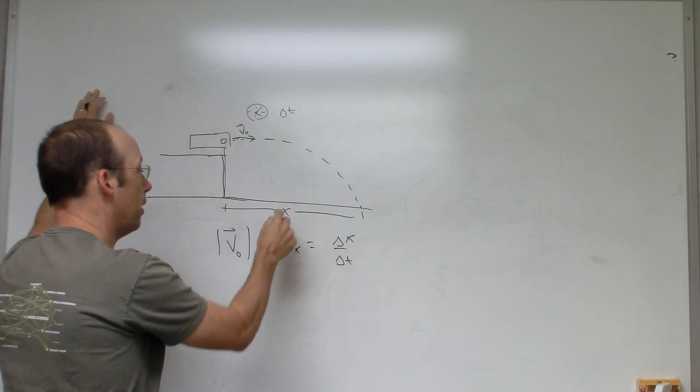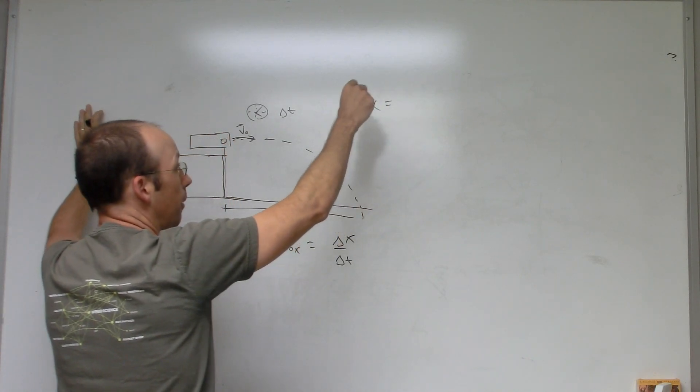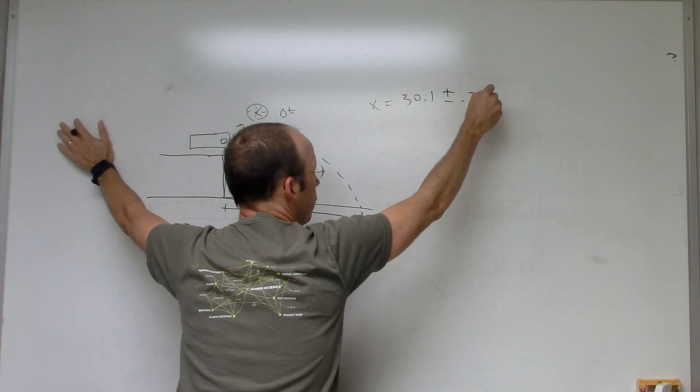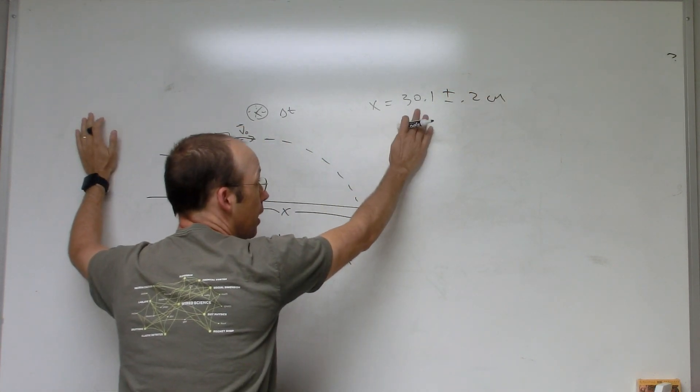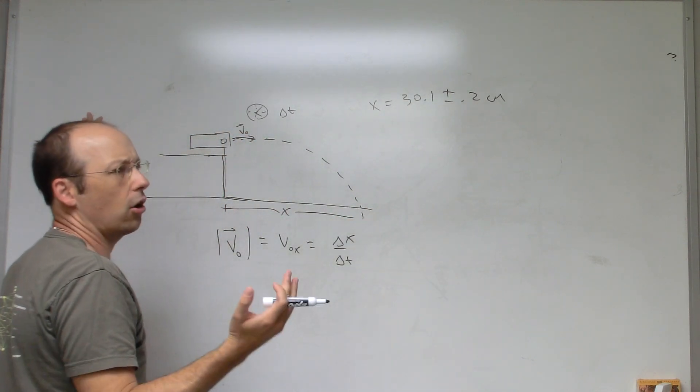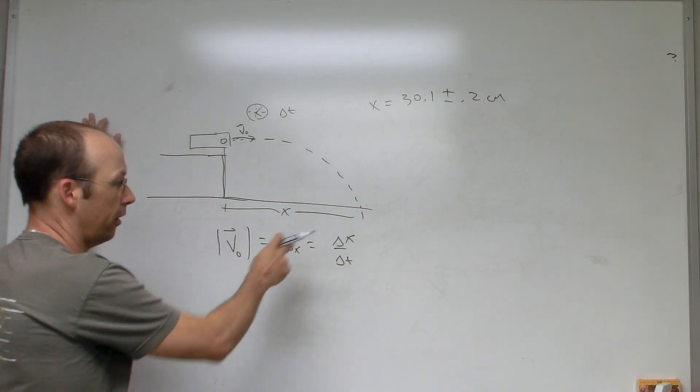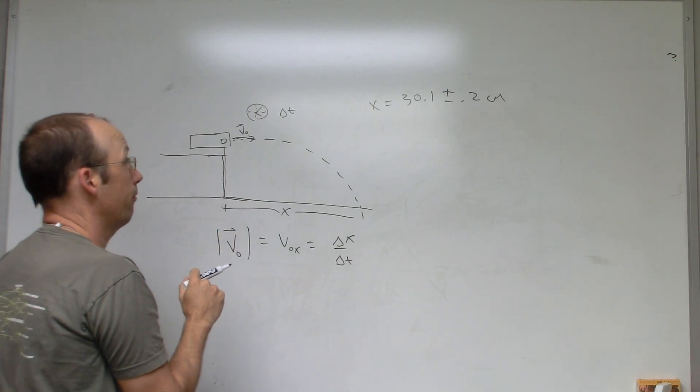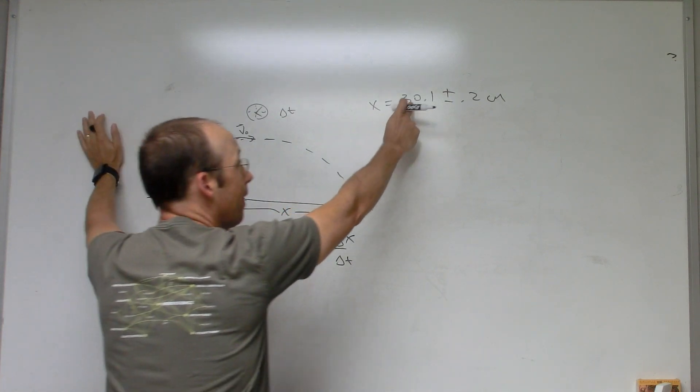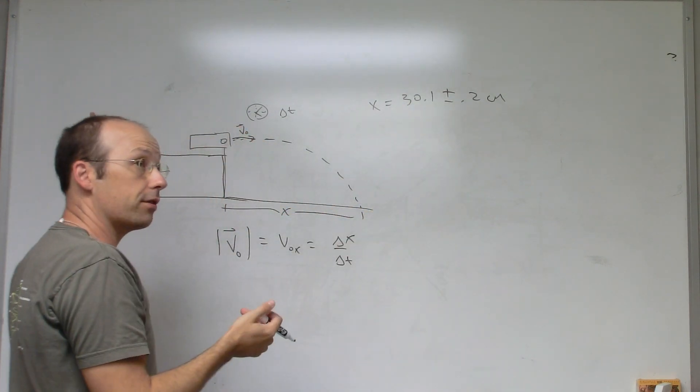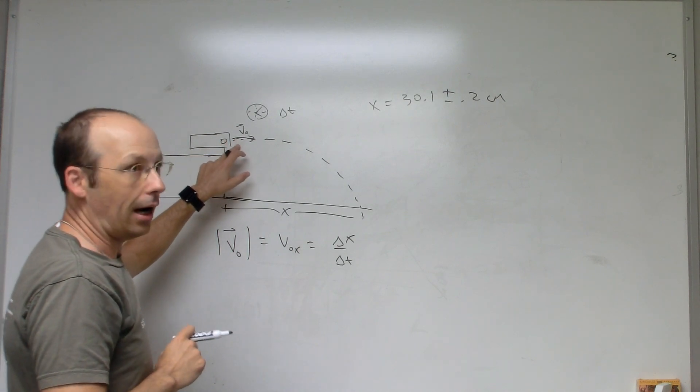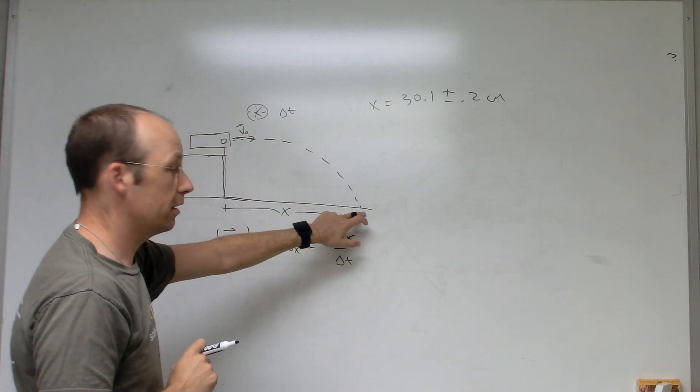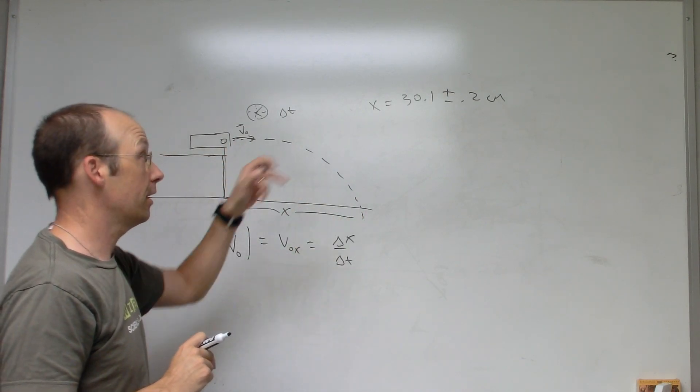Let's say I measure X, I get X equals, I'm just making up something here, 30.1 plus or minus 0.2 centimeters. So this is average X and uncertainty in the X, which I'll call DX right now for the uncertainty in X. How do you get this and how do you get that? Well, this is one of those cases where the velocity may not even be constant, so it's not even just a measurement problem. So what you would do is you launch this five times and measure the distance five times to get an average.